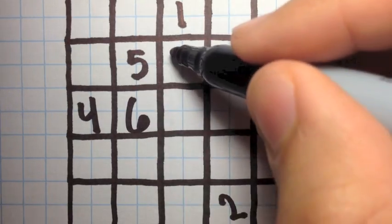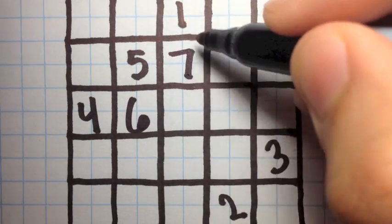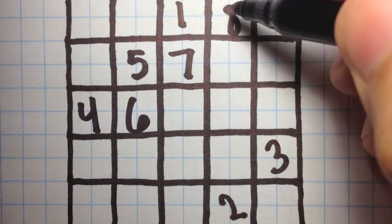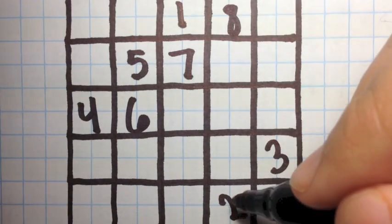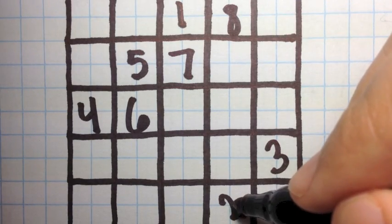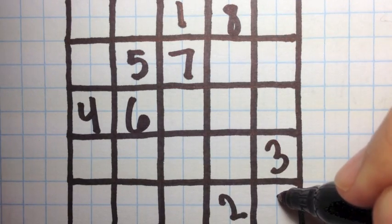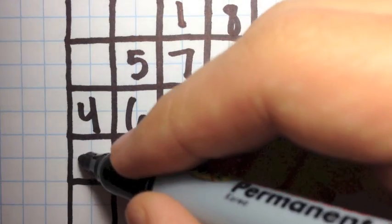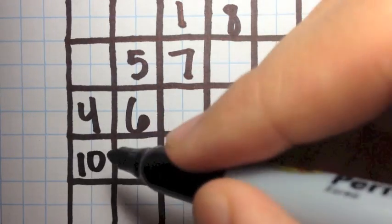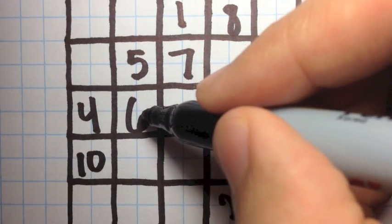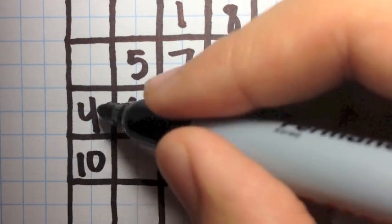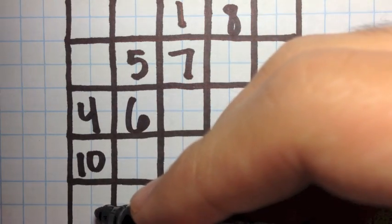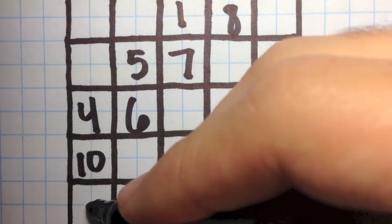So like in the 3x3 magic square, we're going to revert to our last number and go down one. Then up one, to the right one. Up one, to the right one. Up one, to the right one. Up one, to the right one. And once again, there's already a number there if we go up one to the right one, so we're simply going to go down.